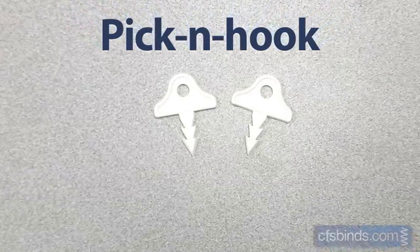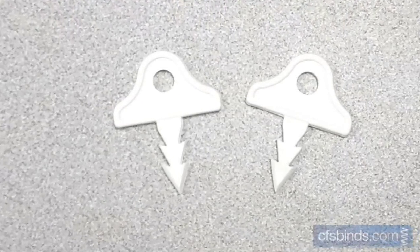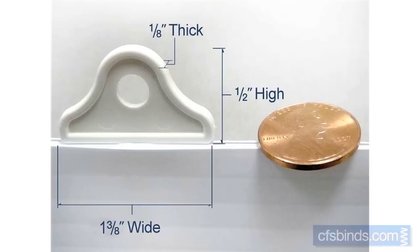Pick and hook hangers are designed for plastic corrugated boards and measure only one and three-eighths inches wide by half an inch high, and are just one-eighth inch thick.